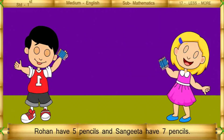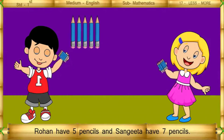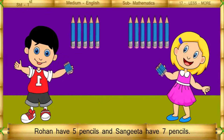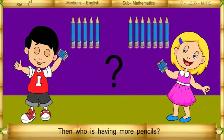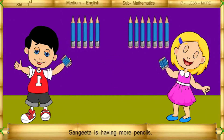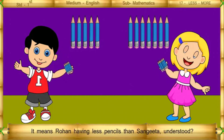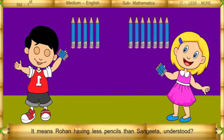Rohan has 5 pencils and Sangeeta has 7 pencils. Then who is having more pencils? Sangeeta is having more pencils. It means Rohan is having less pencils than Sangeeta.